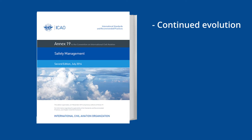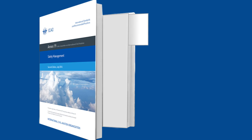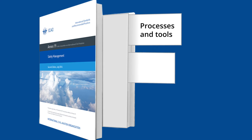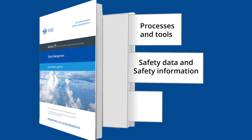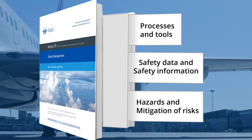Annex 19 – Safety Management supports the continued evolution of a proactive strategy to improve safety performance at the state and service provider levels. Annex 19 provides structured processes and tools that leverage safety data and safety information to support the identification of hazards and the mitigation of the risks associated with those hazards, including those related to change.